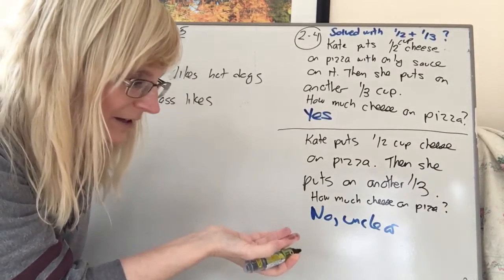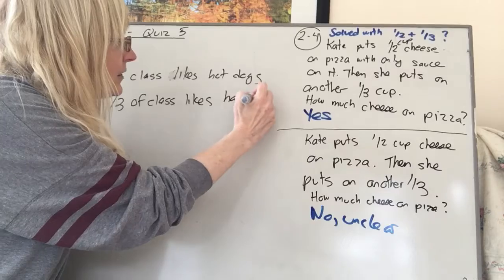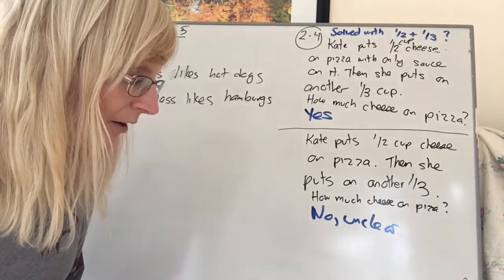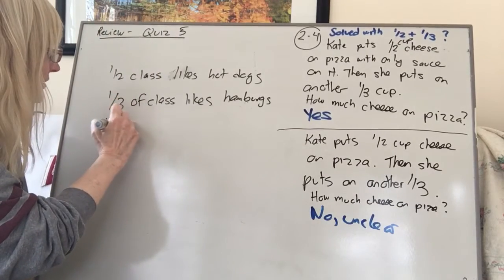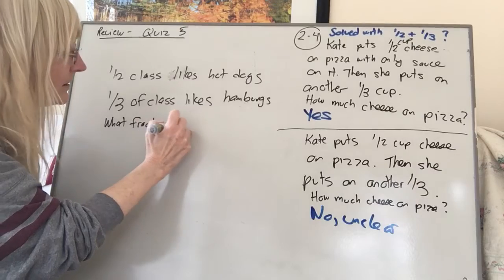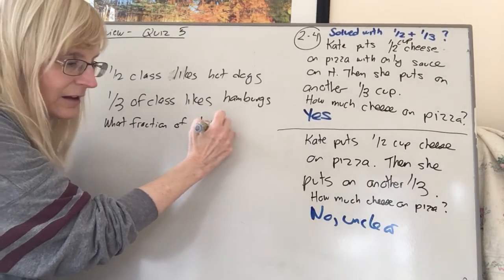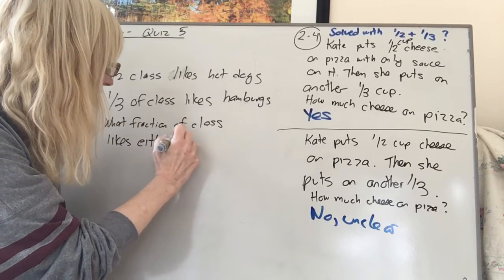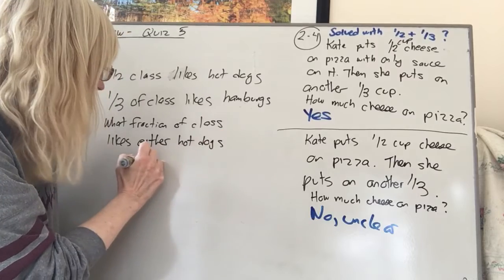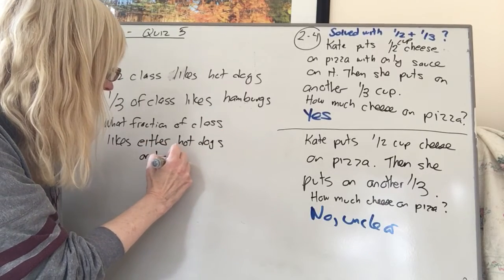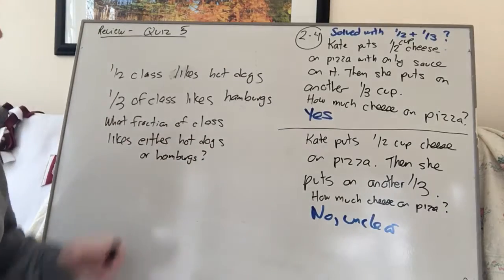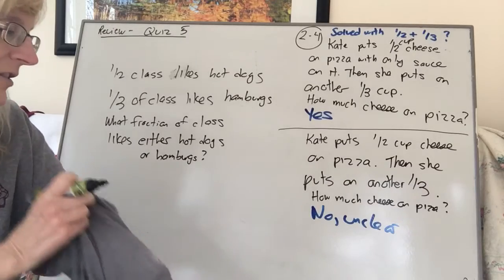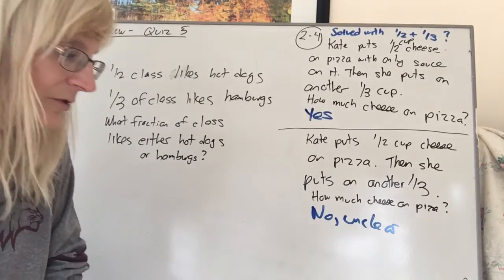So we're talking about the same class, you guys. Like hamburgs. So half of the class likes hot dogs. A third of the class likes hamburgs. What fraction of the class, the total class, likes either hot dogs or hamburgs?